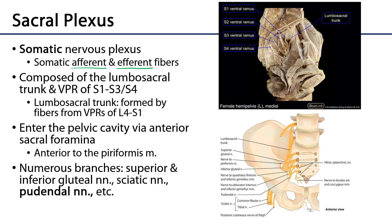Specifically, the sacral plexus is composed of the lumbosacral trunk. The lumbosacral trunk descends down from L4 and L5 and has some S1 fibers to it, and then ventral primary rami of S1, S2, S3, and sometimes S4.